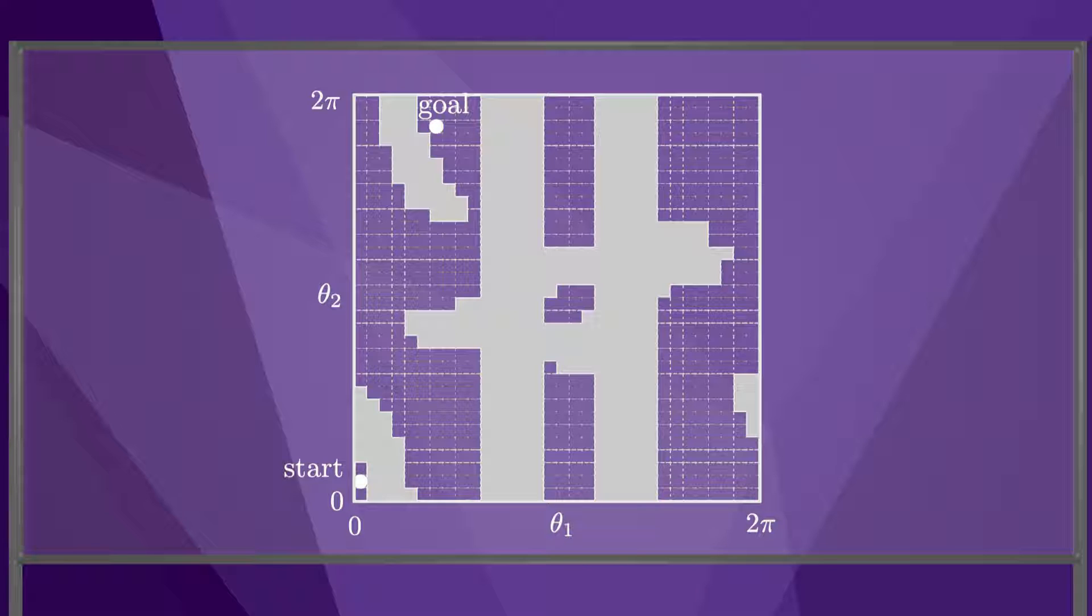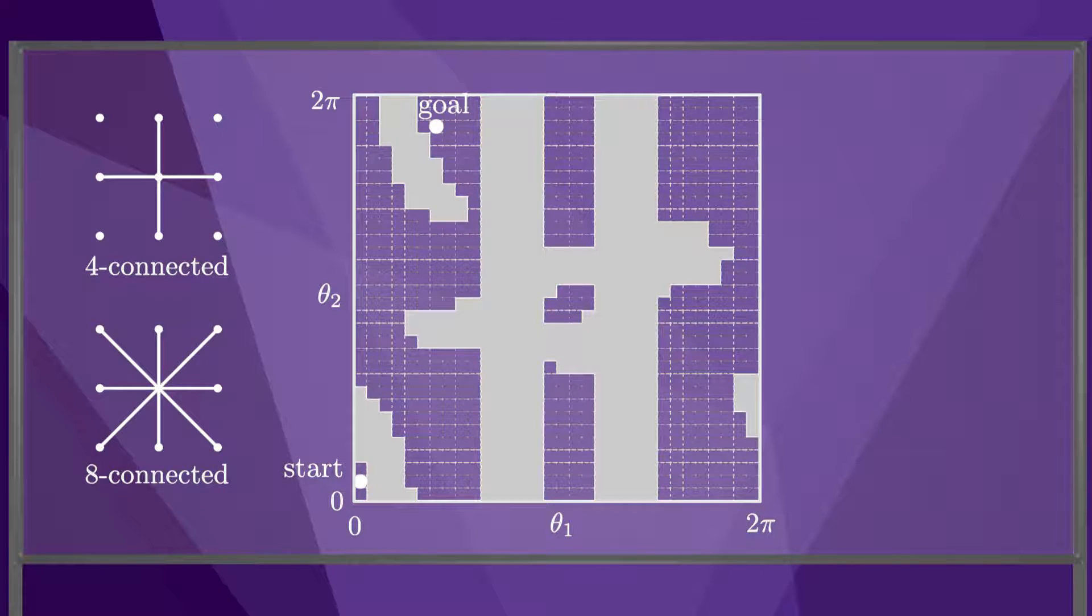To turn this grid into a graph, we have to decide whether the centers of the grid cells are four connected, meaning that an edge exists between two free grid cells if they are directly north, south, east, or west of each other. Or whether the centers of the grid cells are eight connected, meaning that neighboring free grid cells along a diagonal are also connected. With this choice, the center of each free grid cell is considered to be a node of the graph, and edges are between the four or eight connected free grid cells.